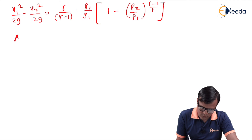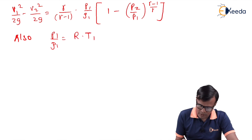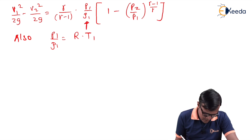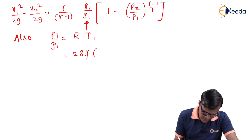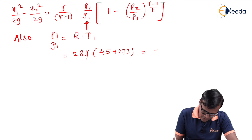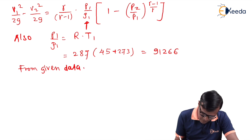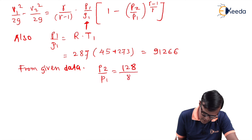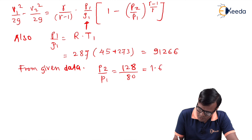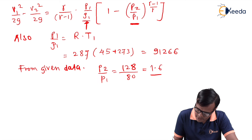We also know that p1/ρ1 = R·T1. Substituting R = 287 and T1 = 45 + 273 = 318 K gives R·T1 = 91,266 J/kg. Also, p2/p1 = 128/80 = 1.6. These values are now ready to substitute into the equation.